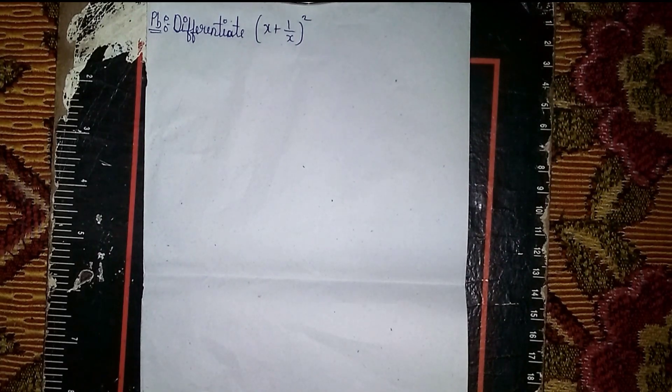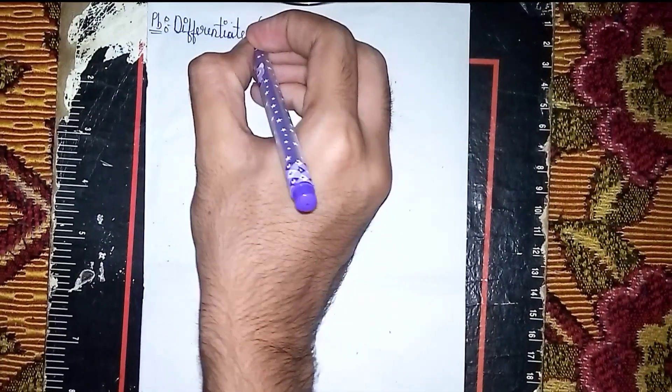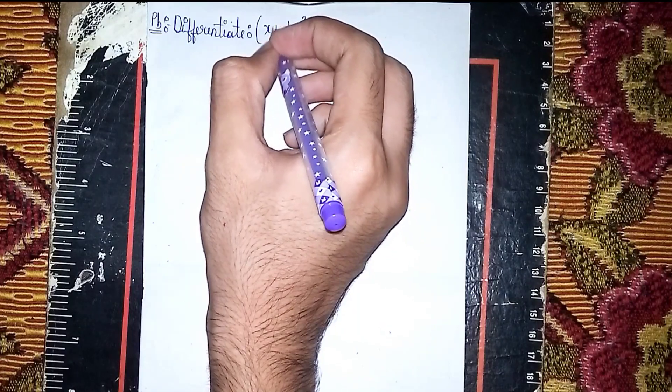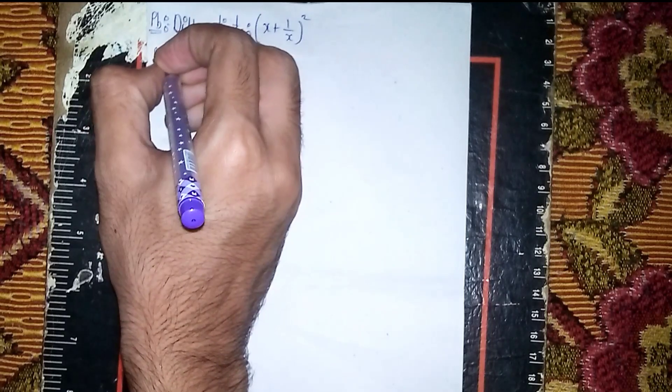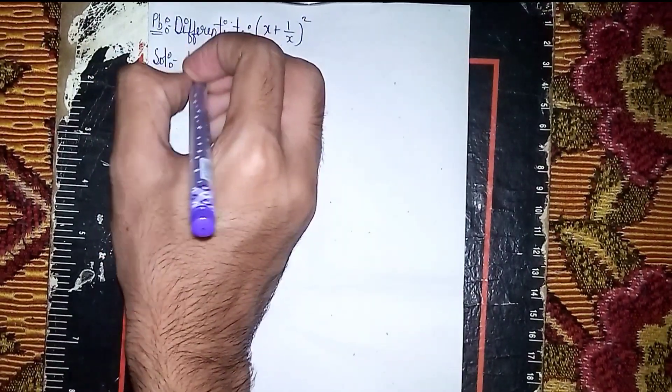Hello, welcome back to my channel. Today's question: differentiate (x+1)/x whole squared. This is our differential question. For the solution, let us assume y is equal to (x+1)/x whole squared.